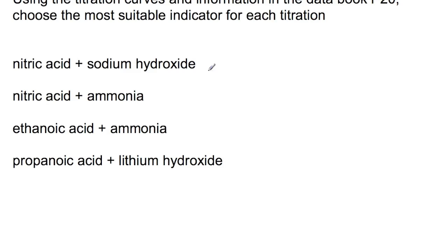For this first reaction, nitric acid plus sodium hydroxide, we have a strong acid and a strong base. That means our end point is 7. If you look at page 20, you'll find there are two suitable indicators, bromothymol blue or phenyl red.